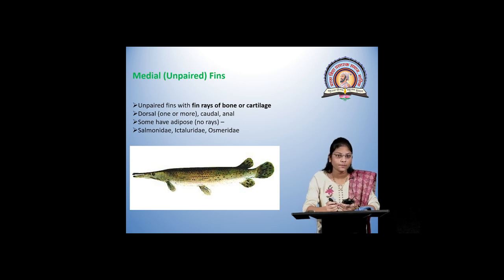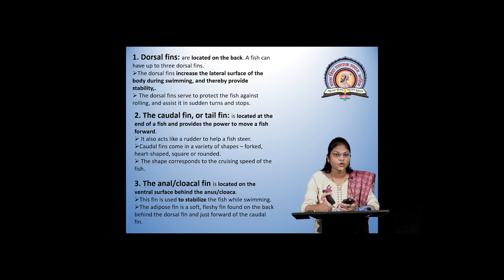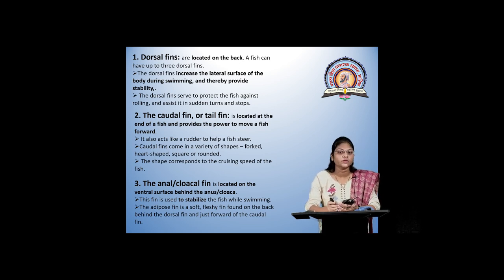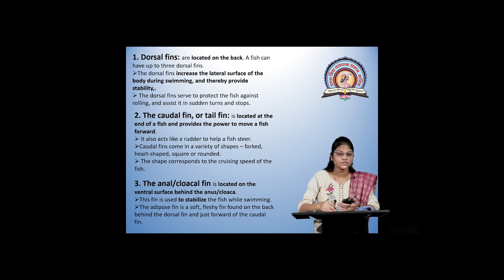Let us discuss medial or unpaired fins. These fins have fin rays made up of bones or cartilages. First is the dorsal fin, which is present on the dorsal side — the back of the fish. It increases the lateral surface of the body during swimming and provides stability. Next is the caudal fin or tail fin, located at the posterior end, providing power to move the fish forward and helping give direction during swimming. Next is the anal or cloacal fin, located near the anus or cloaca at the ventral surface, used to stabilize the fish while swimming.